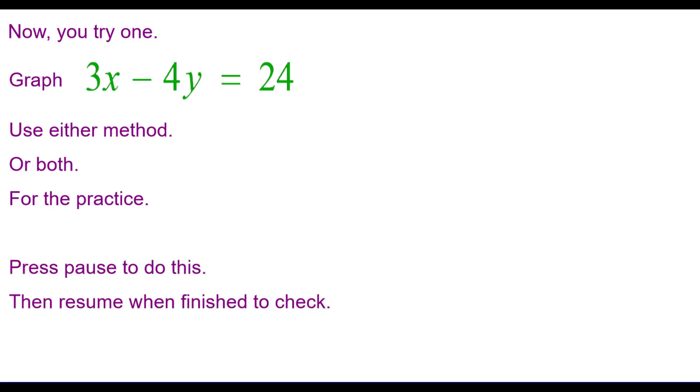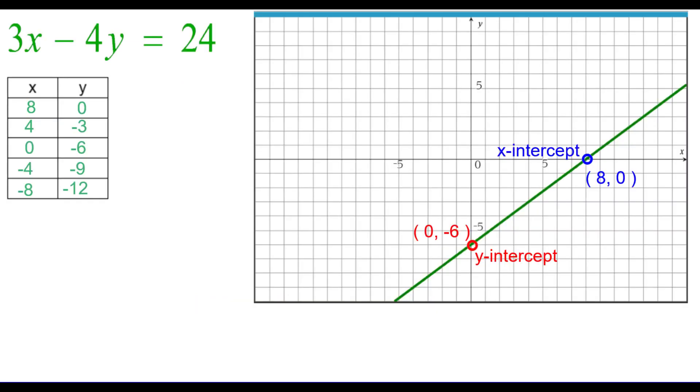Now you try one. Graph this equation using either method or both for the practice. Press pause to do this and resume when you're finished to check. And here's the answer with the table of values, with the Y intercept and the X intercept shown. And then the green line is the graph.